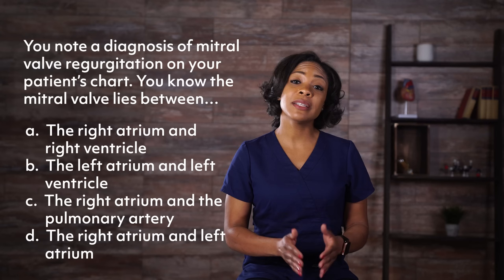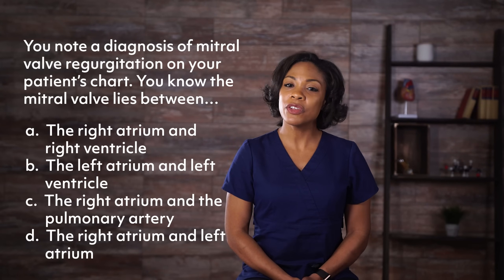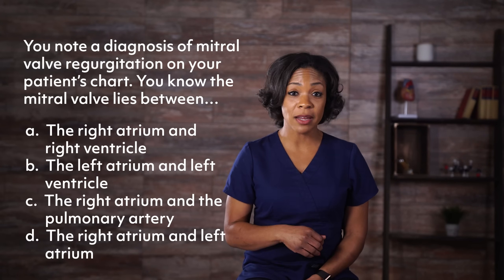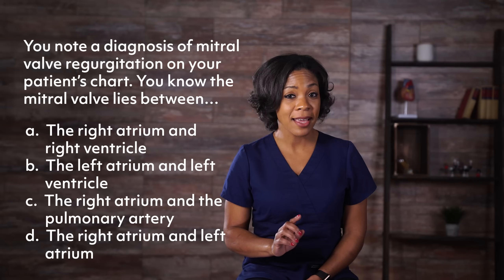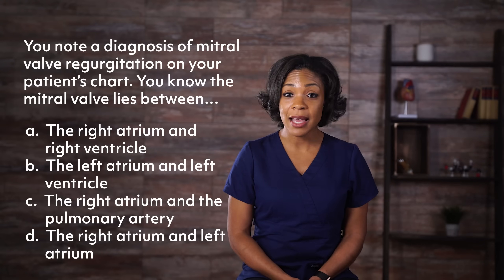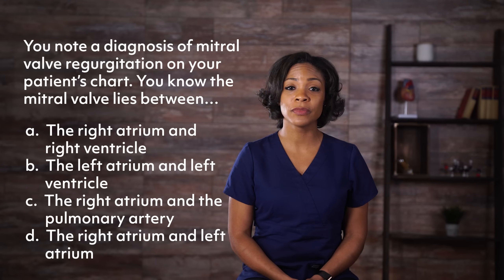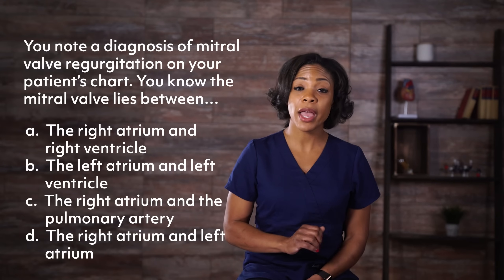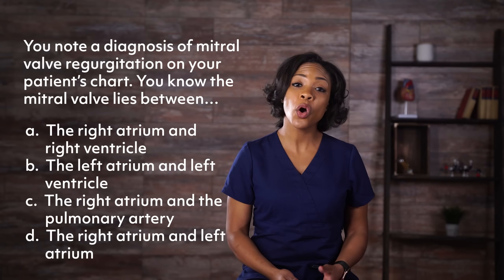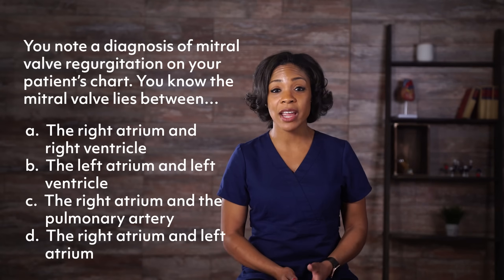Now let's test your knowledge with a couple of practice questions. You note a diagnosis of mitral valve regurgitation on your patient's chart. You know the mitral valve lies between: a) the right atrium and right ventricle, b) the left atrium and left ventricle, c) the right atrium and pulmonary artery, or d) the right atrium and left atrium.